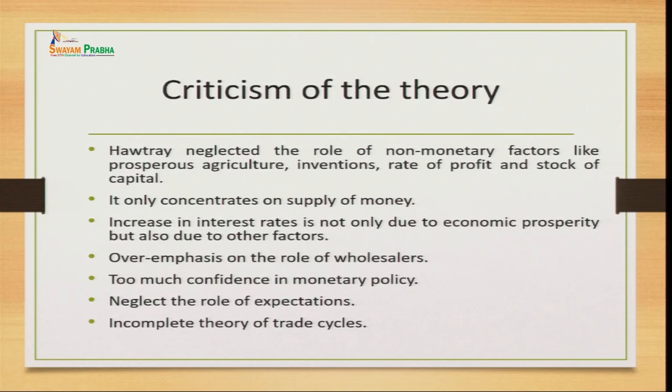Looking at criticisms of Hothray's theory: first, Hothray neglected the role of non-monetary factors like prosperous agriculture, inventions, rate of profit, and stock of capital. This theory is only based on the belief that changes happen because of monetary reasons — the money supply in the market — ignoring non-monetary factors. Second, it only concentrates on supply of money, which is not the only factor when we consider all macroeconomic variables.